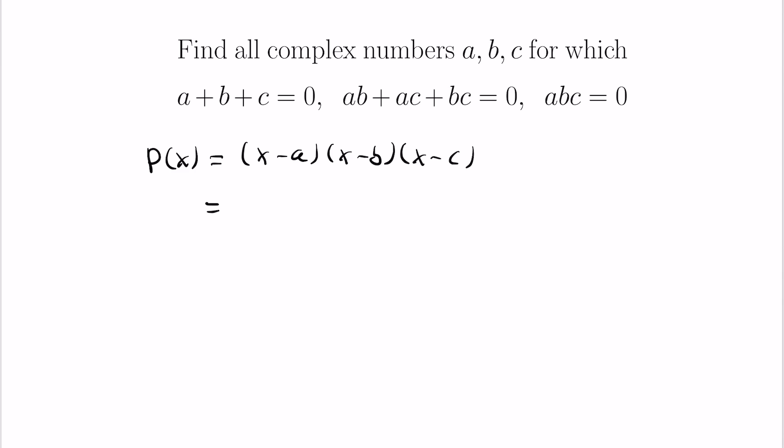So let's expand this polynomial. So the first term is x cubed. Now the next term is x squared times the negative of the sum of the roots. The sum of the roots is zero, so this is negative zero, so this is zero.